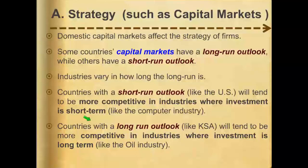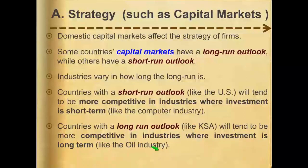Countries with a short-run outlook, like the United States, will tend to be more competitive in industries where investment is short-term. The strategy affects what kind of investments or industries will be competitive in the country. On the other hand, countries with a long-run outlook, like Saudi Arabia, will tend to be more competitive in industries where investment is long-term, like the oil industry, which is inherently a long-term industry.